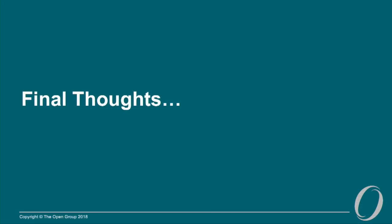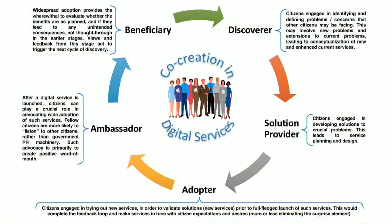Final thoughts: citizens are central. We use citizens to discover services, as solution providers to identify solutions, to adopt during the experimentation phase, as ambassadors, and as beneficiaries of services and benefits. The entire lifecycle of citizen participation is integrated into the reference architecture. People are an important part when dealing with government and public services — something we always forget when focused on business and technology.